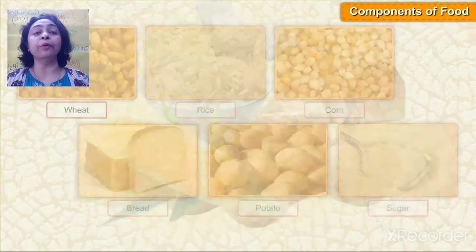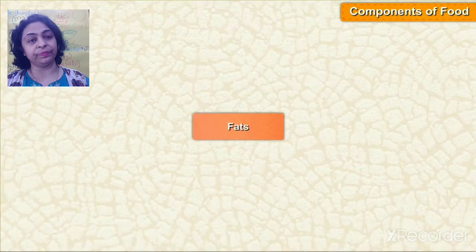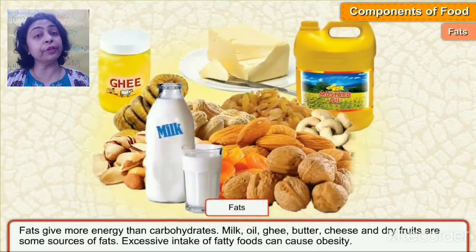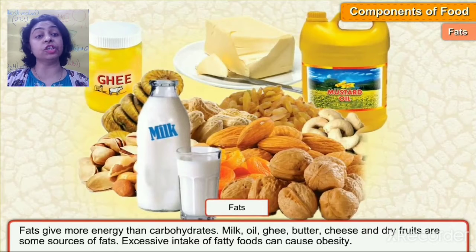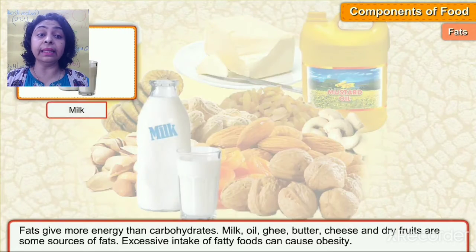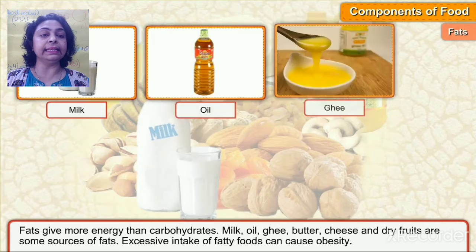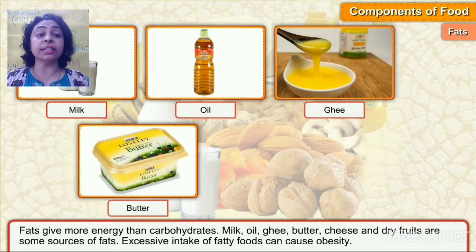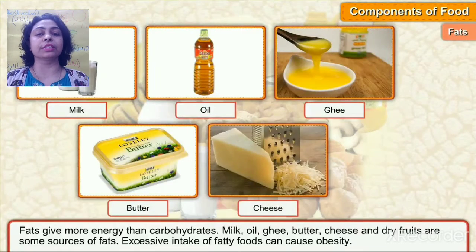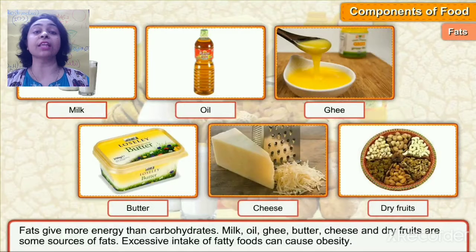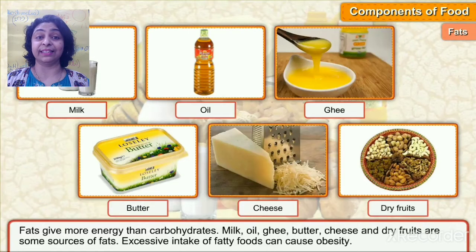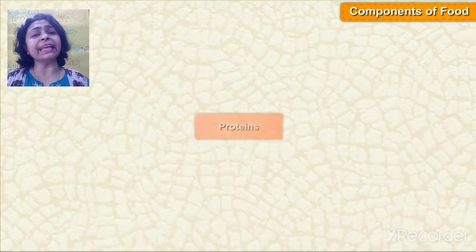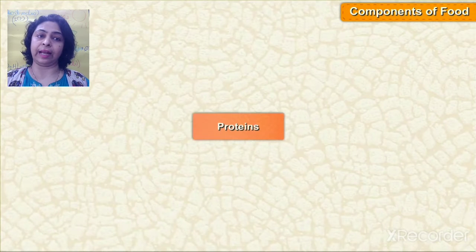Carbohydrates give us energy. Now, fats. Fats give more energy than carbohydrates. Milk, oil, ghee, butter, cheese, and dry fruits are some sources of fats. Excessive intake of fatty foods can cause obesity, so we should not take excess amounts of fats.